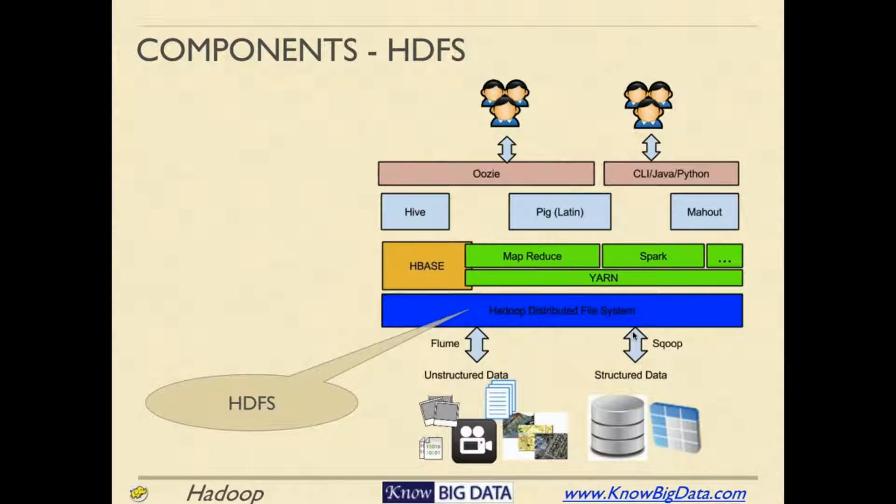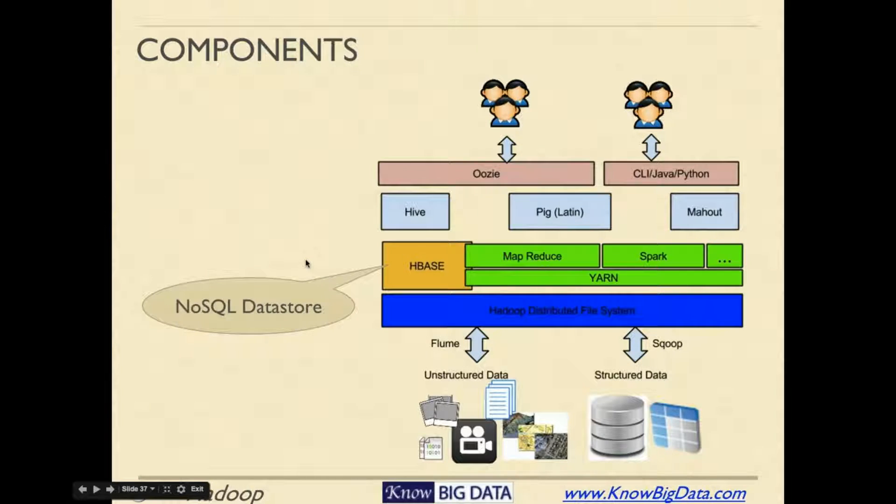The next component is HBase. HBase is a NoSQL data store. A common question people ask is why would you use HBase when you have HDFS? The reason is, in HBase you store data in a tabular format. Not everything can fit into tabular format—if you want to store images or something else, you would like to store it in HDFS instead of in a tabular structure.